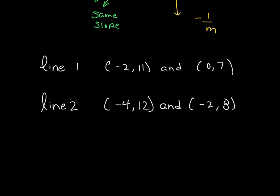First, I want to find the slope of line 1. I do that by labeling my values x1, y1, x2, y2. So my slope is 7 minus 11 over 0 minus negative 2, which is negative 4 over a positive 2. And it's a positive 2 because I subtract a negative, turns that into a positive. So my slope here is negative 2.